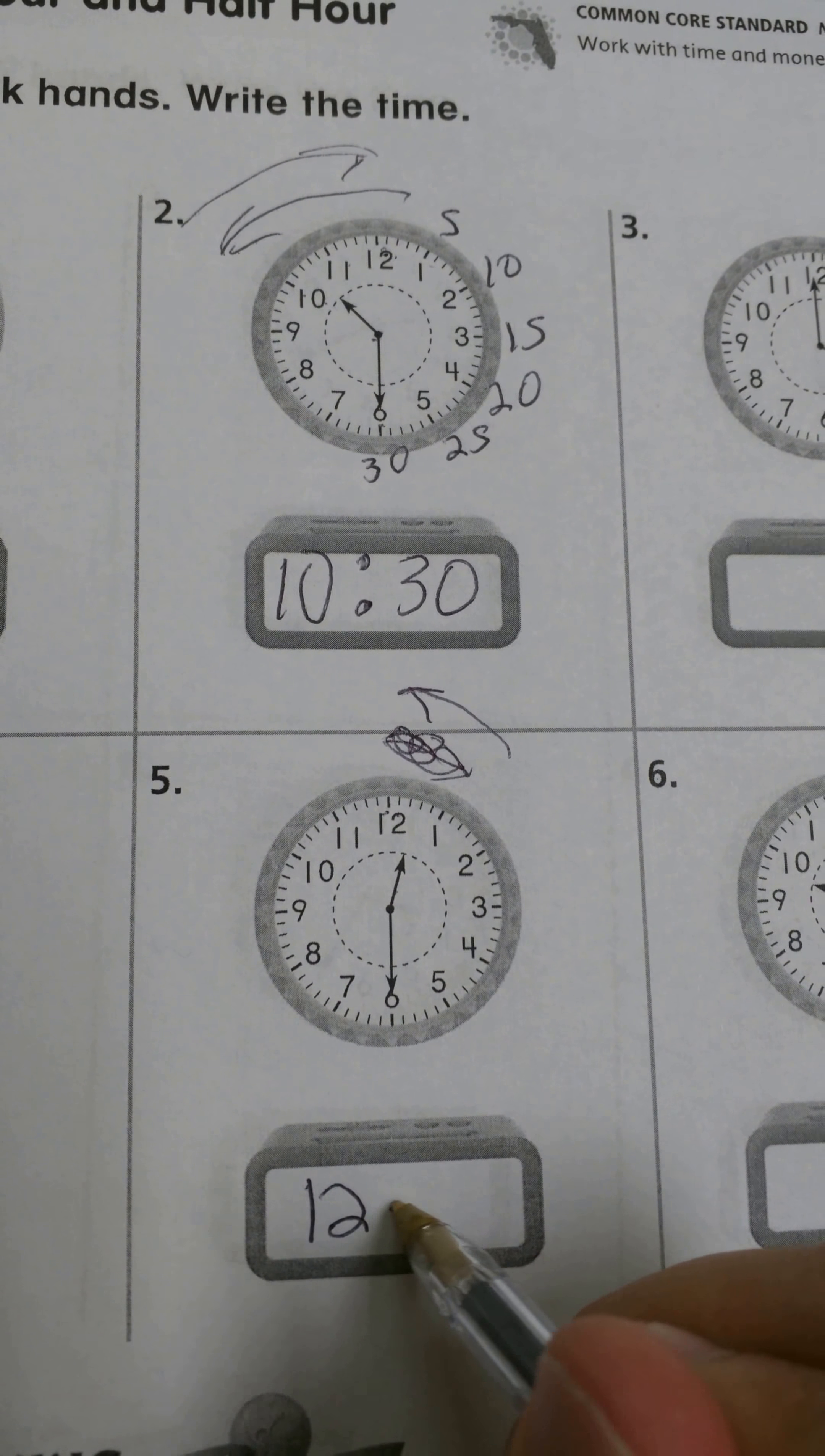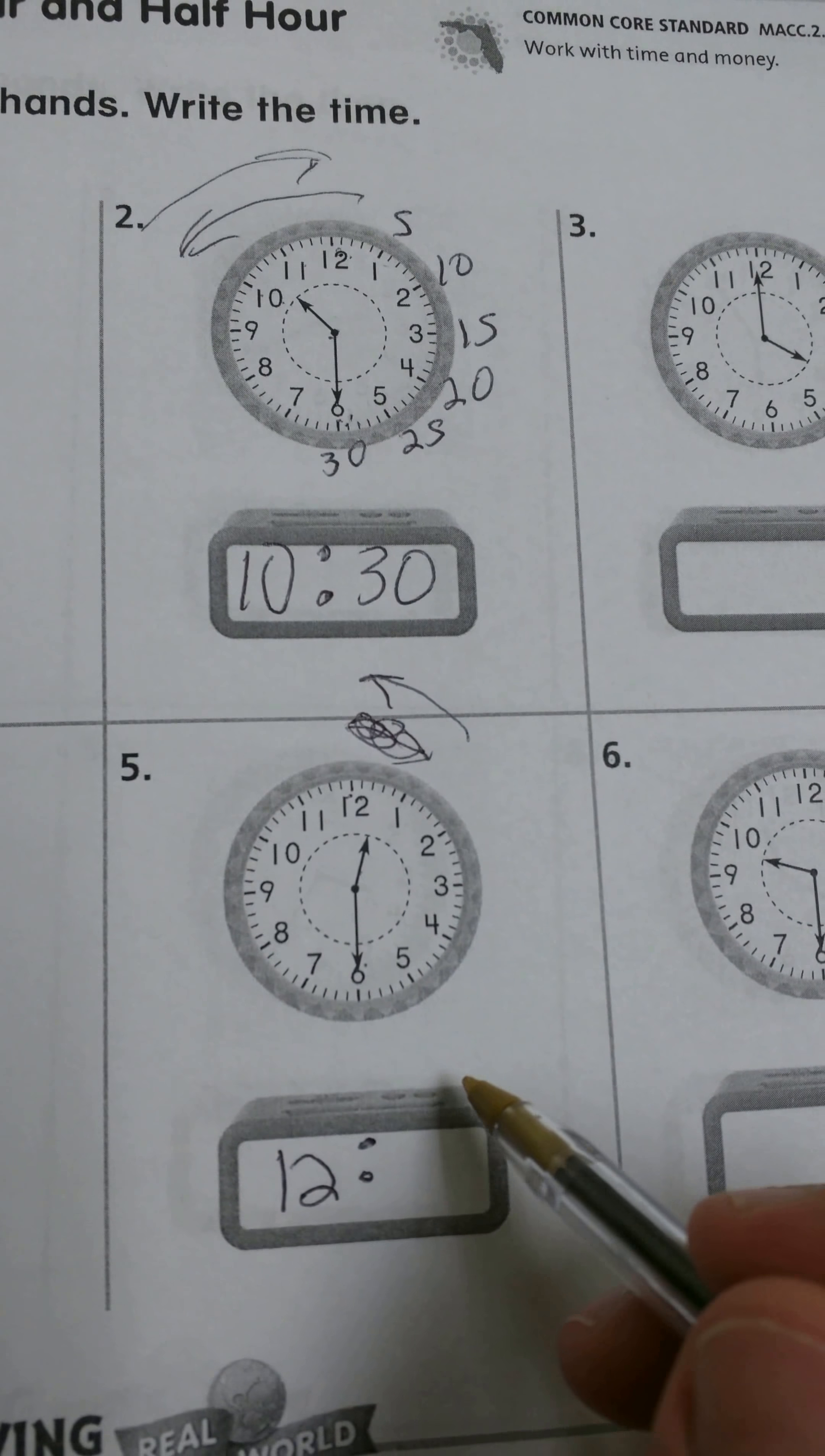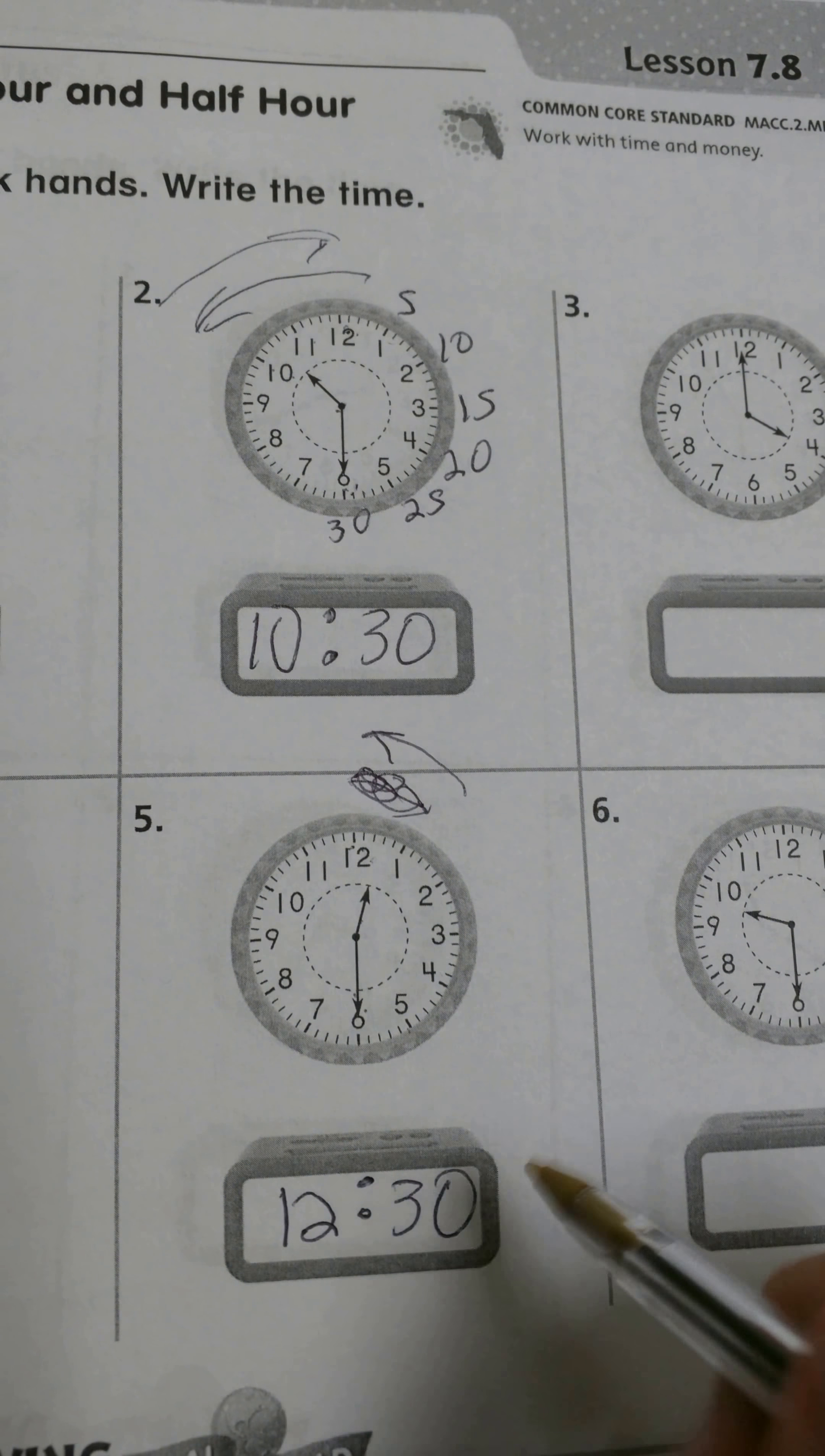I'll do my colon here, and once again, you see the minute hand is on the 6, just like the previous problem in number 2. So if it's pointing at the 6, just as we said before: 5, 10, 15, 20, 25, 30. So I have 12:30.